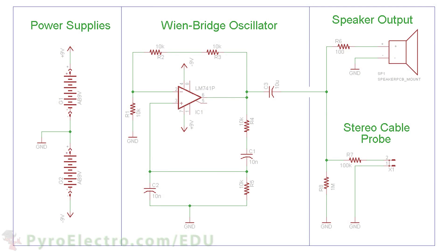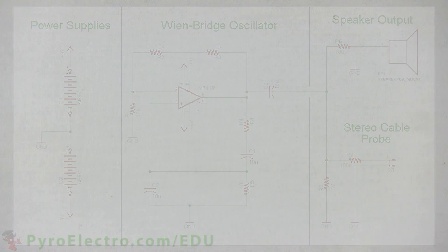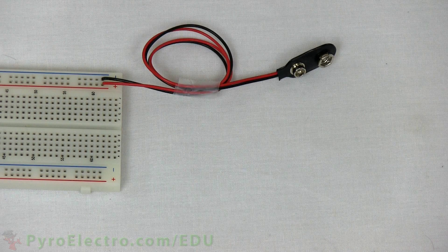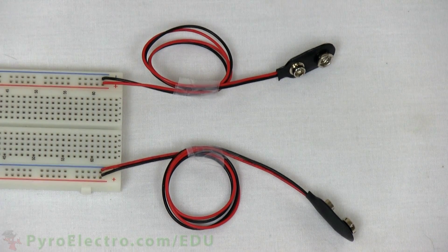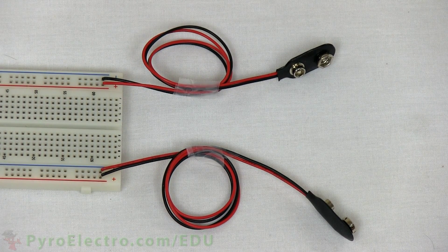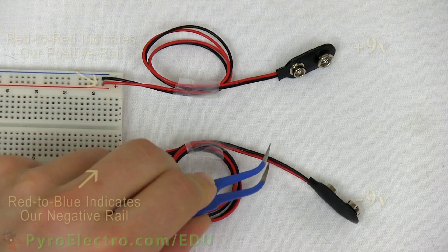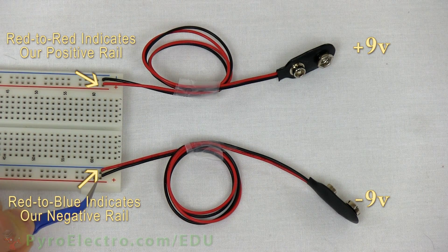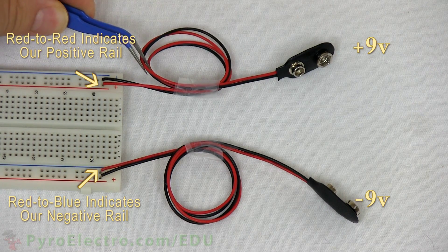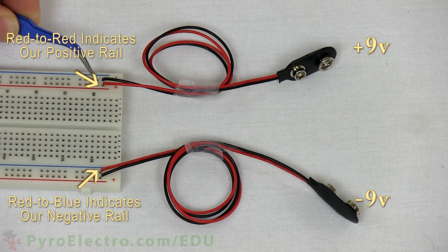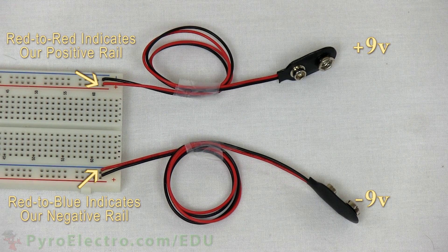Now take some time and build the circuit. We'll show the step-by-step construction process now. The two 9-volt battery connectors serve a unique purpose. One connector will be our plus 9-volt or positive voltage rail, and the other one will be our minus 9-volt or negative voltage rail. These two power connections will be fed into the 741 op-amp's V++ and V-- pins, as seen in the schematic.